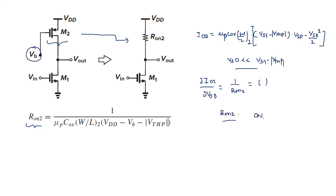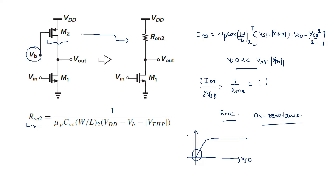R_on2 is the on-resistance of M2 when it is working in the deep triode region. Looking at the output characteristics of transistor M2: with V_SD on the x-axis and id on the y-axis, when the input V_SD is very small — near the origin — M2 is in the deep triode region. Beyond that point is the linear region, and then saturation. So this on-resistance is used for gain calculation of the input device M1.